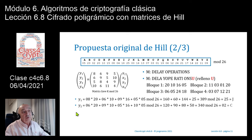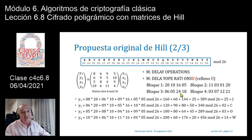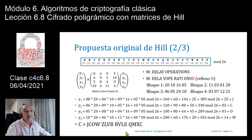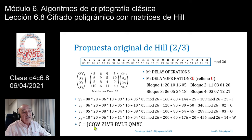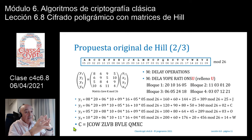El primer bloque de texto en claro DELA se cifra como JCOW. Seguimos con los demás tres bloques obteniendo el criptograma completo: JCOW (bloque 1), ZLVB (bloque 2), BVLE (bloque 3), y QMXC (bloque 4), donde había un relleno en el último bloque. Ya sabemos cómo cifrar.